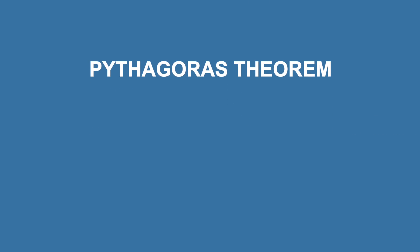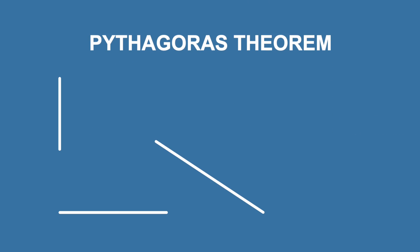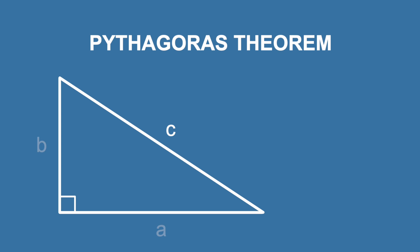Pythagoras' theorem states that for any right-angled triangle, the square of the length of the hypotenuse — that's the side opposite the right angle — is equal to the sum of the squares of the lengths of the other two sides.